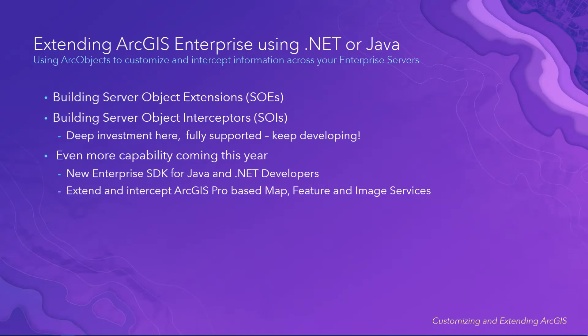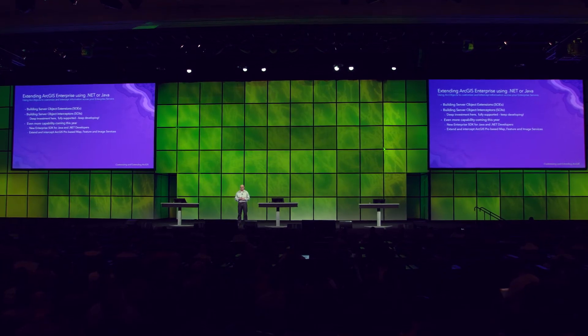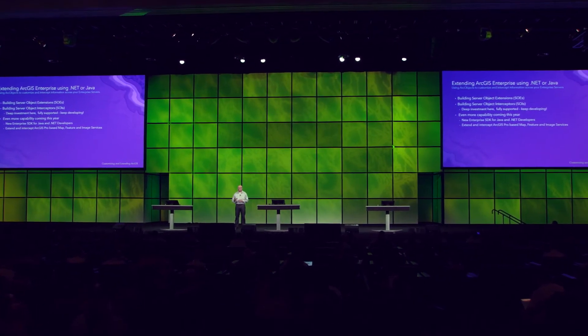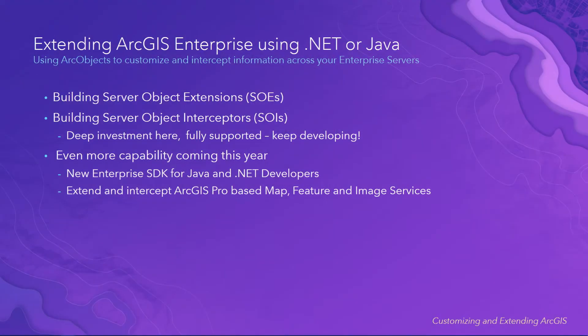If you're extending ArcGIS Enterprise, you're probably using server object extensions (SOEs) or server object interceptors (SOIs). We understand you have a deep investment here from the server perspective as well — fully supported, keep on developing using those patterns. And we've got some exciting news: even more capabilities are coming this year. We're working right now on a brand new enterprise SDK for Java and .NET, which will allow you to extend and intercept ArcGIS Pro-based map, feature, and image services. You'll hear more about that in tech sessions at the conference.